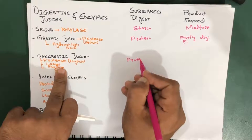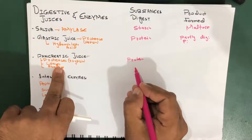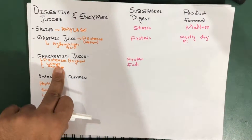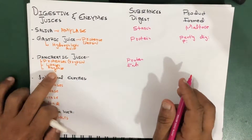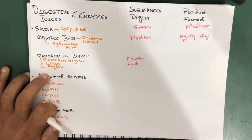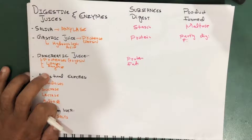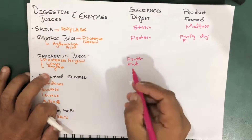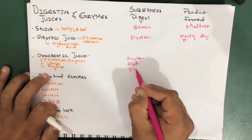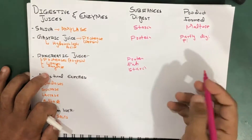Lipases digest fats, which are actually emulsified by bile — remember that lipases digest the fats that have been emulsified by bile. And amylase, in a similar case, digests the starch.